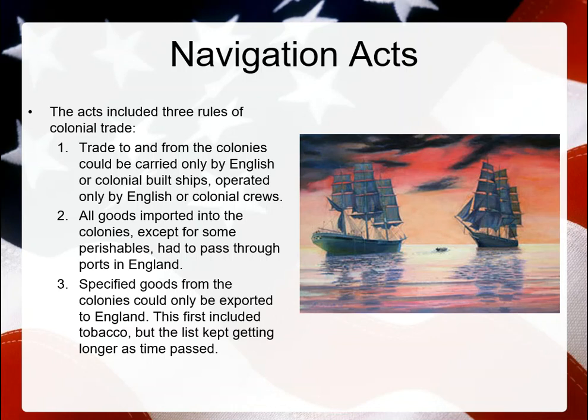All goods imported into the colonies, except for perishables, had to pass through ports in England. Specific goods from the colonies could only be exported to England — this first included tobacco, but the list kept growing longer and longer until colonists felt like they were being put into a corner. They were losing freedom and the autonomy that was one of the main reasons so many people left England for America.